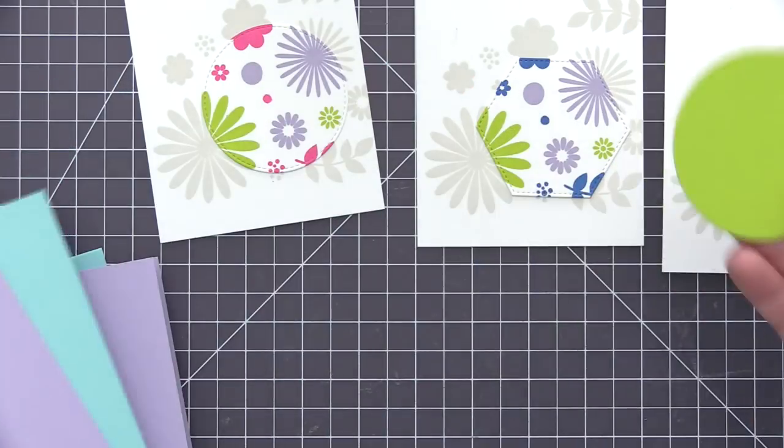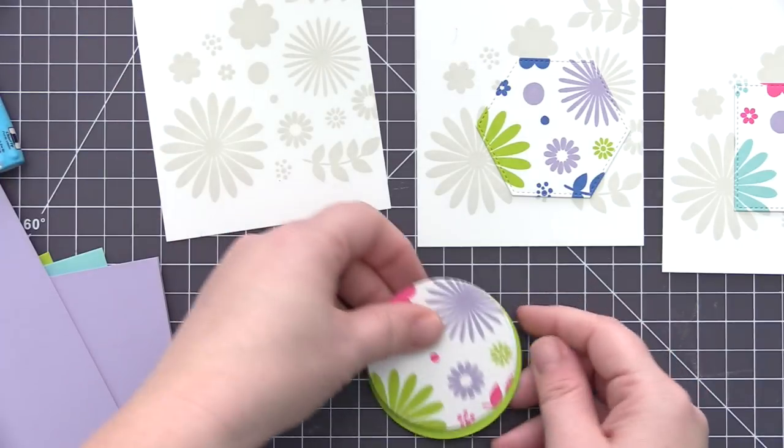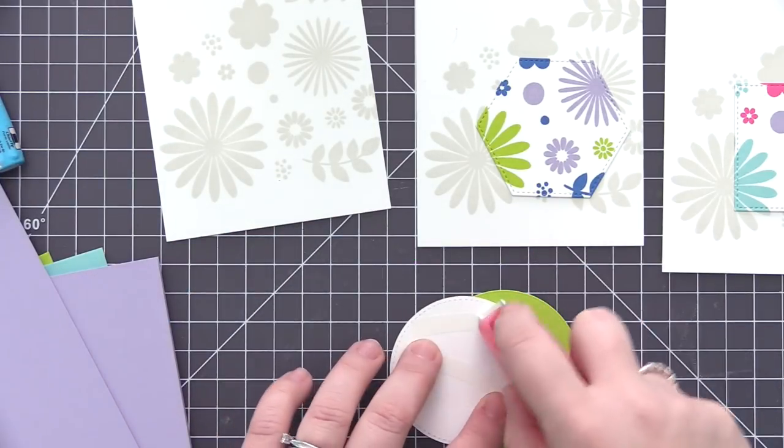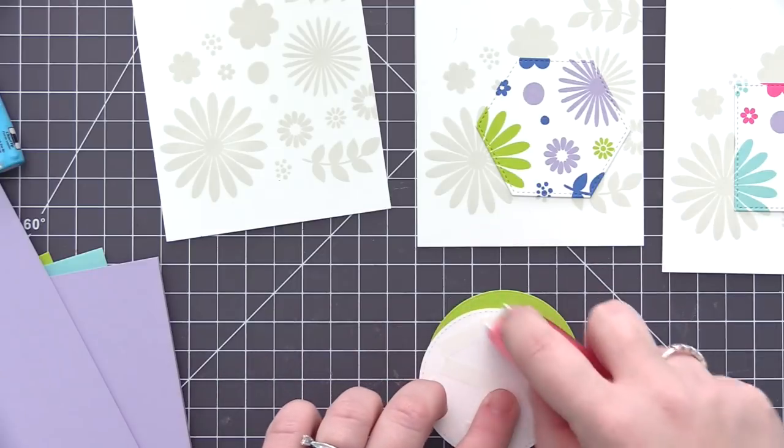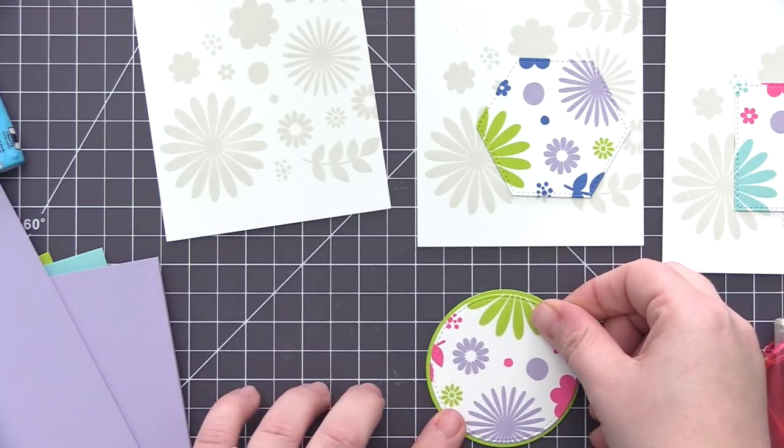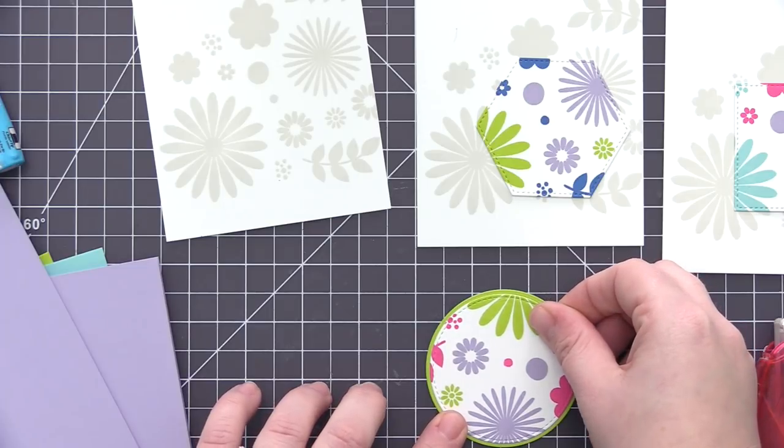So now I've picked out some matching cardstock colors here. I have Wild Wisteria, Summer Splash, and Limelight. And what I'm going to do is I'm going to create kind of a little mat that I can put behind each of the spotlight panels. So for the circle one I used a Circle Stacks die and cut one just slightly larger than the circle that we created.